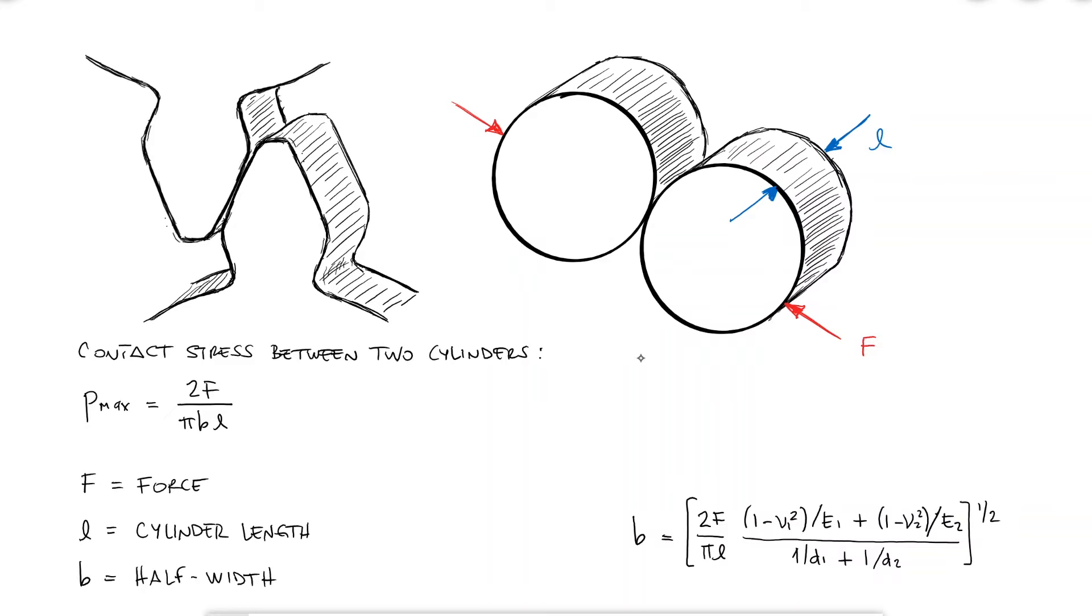The easiest one to see is the length L. The length of the cylinders in contact would be the face of the gear F, which we talked about during the last video.